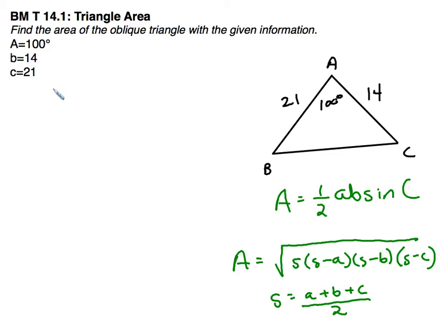To set it up, area is going to equal 1/2 one side times the other side times the sine of the included angle. It doesn't necessarily have to be A and B and sine of C. We just want to make sure that angle is in between those two sides.